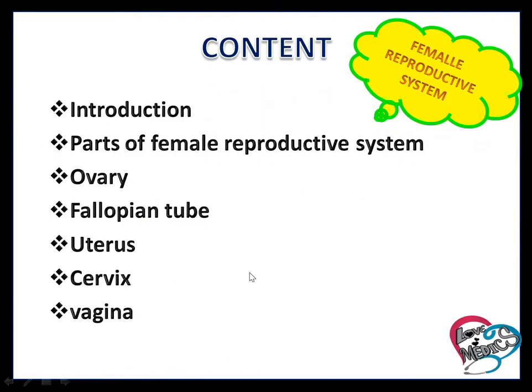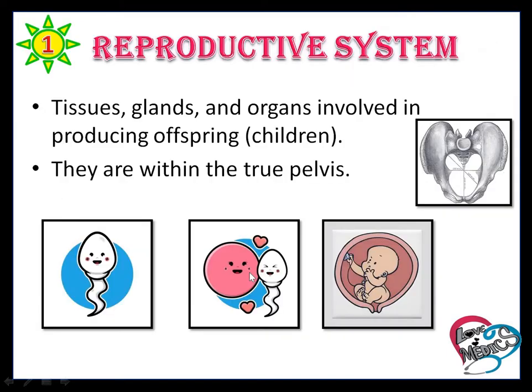Content of the video: introduction, parts of the female reproductive system — ovary, fallopian tube, uterus, cervix, and vagina.